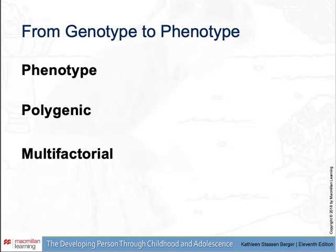From genotype to phenotype: phenotype is the observable characteristics of an organism, including appearance, personality, intelligence, and all other traits. Some traits are polygenic — influenced by many genes. Some are multifactorial — affected by many factors, both genetic and environmental, that enhance, halt, shape, or alter the expression of genes, resulting in a phenotype that may differ remarkably from the genotype. Most traits are polygenic and multifactorial.